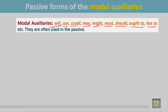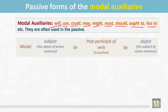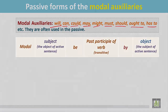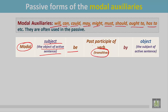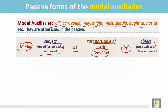They are often used in the passive in the interrogative form. The sentence begins with the modal, then the subject — which is the object of the active sentence — then 'be', followed by the transitive verb in the past participle form, then the preposition, and finally the object, which is the subject of the active sentence.